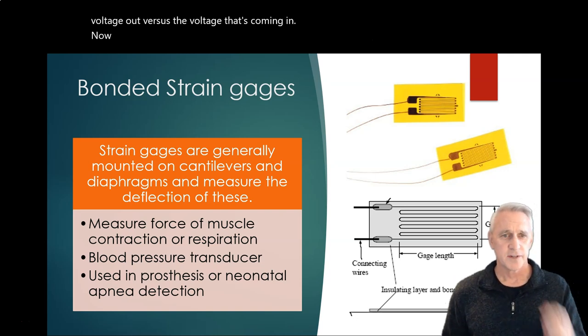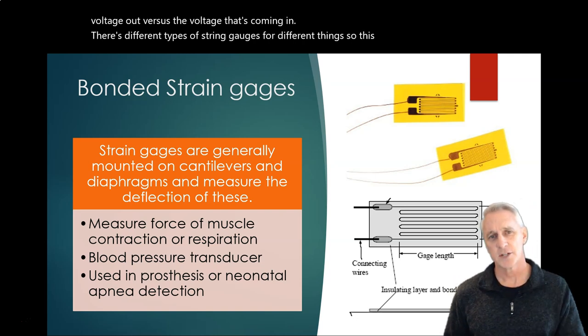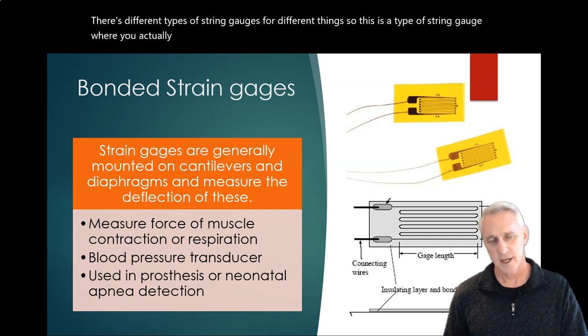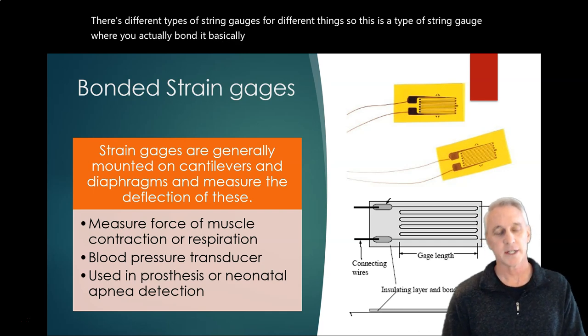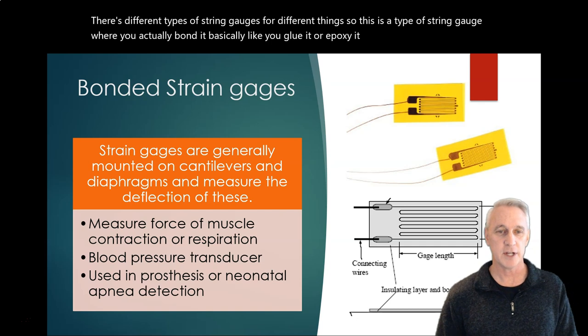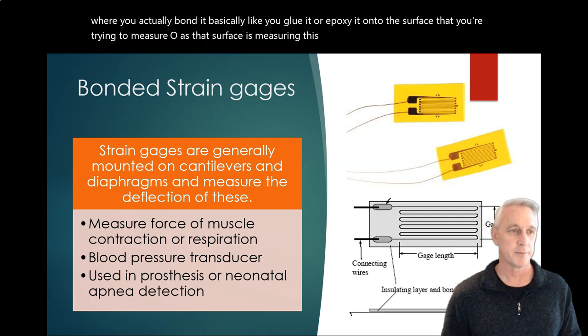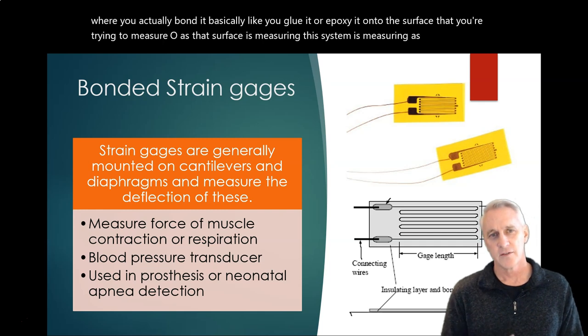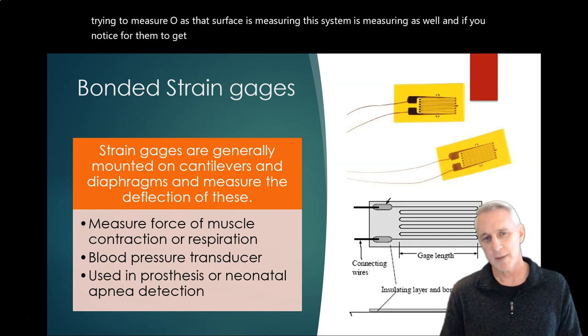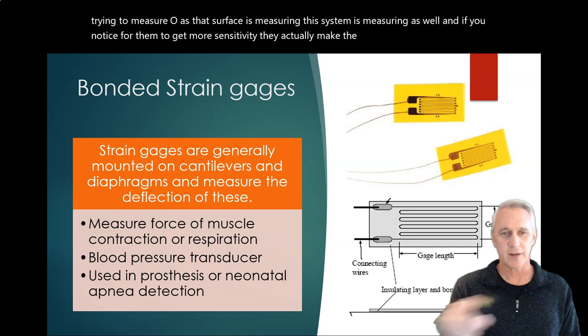Now, there's different types of strain gauges for different things. So this is a type of strain gauge where you actually bond it, basically like you glue it or epoxy it onto the surface that you're trying to measure. So as that surface is measuring, this system is measuring as well.